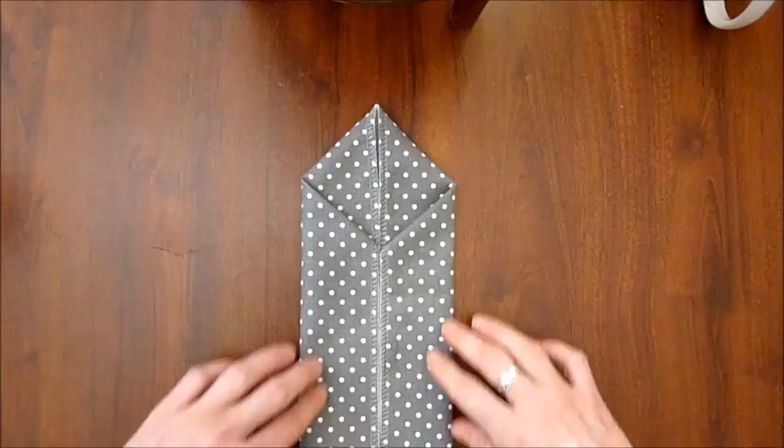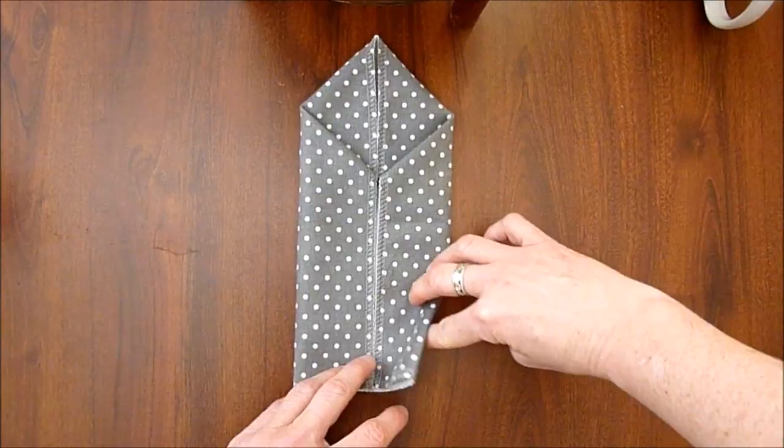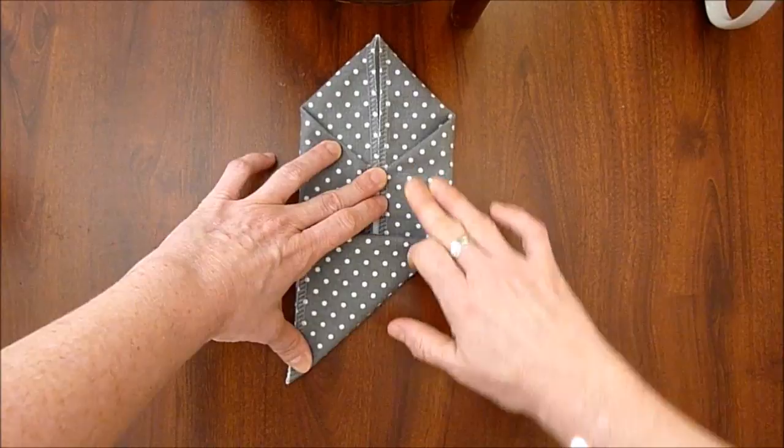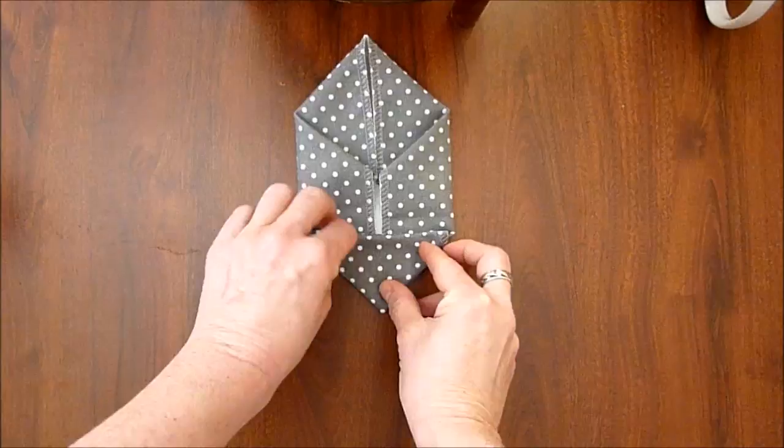Okay, from here you're going to put it like this, and then you're going to take the bottom here and make another triangle, matching the side. And then matching the other side here.